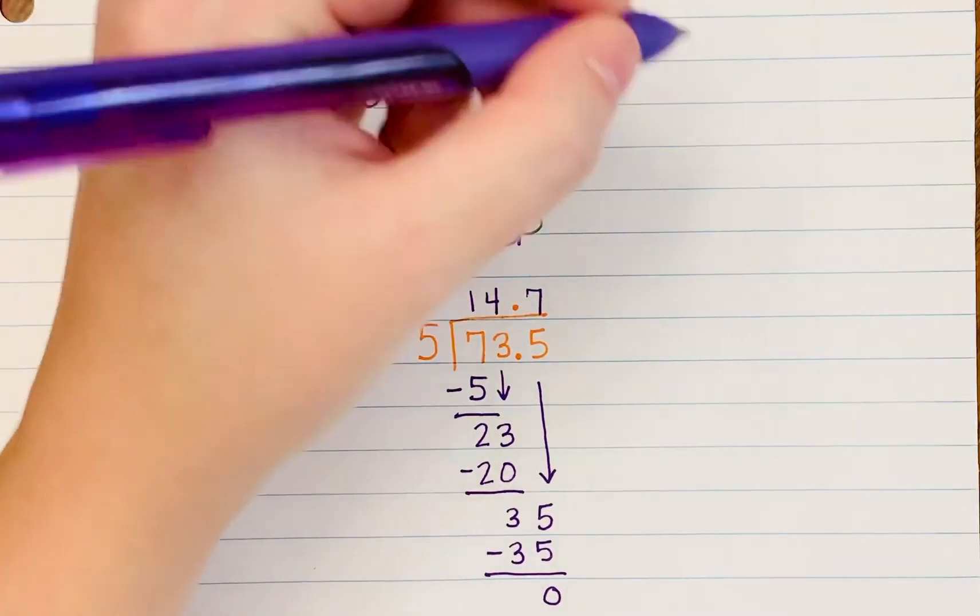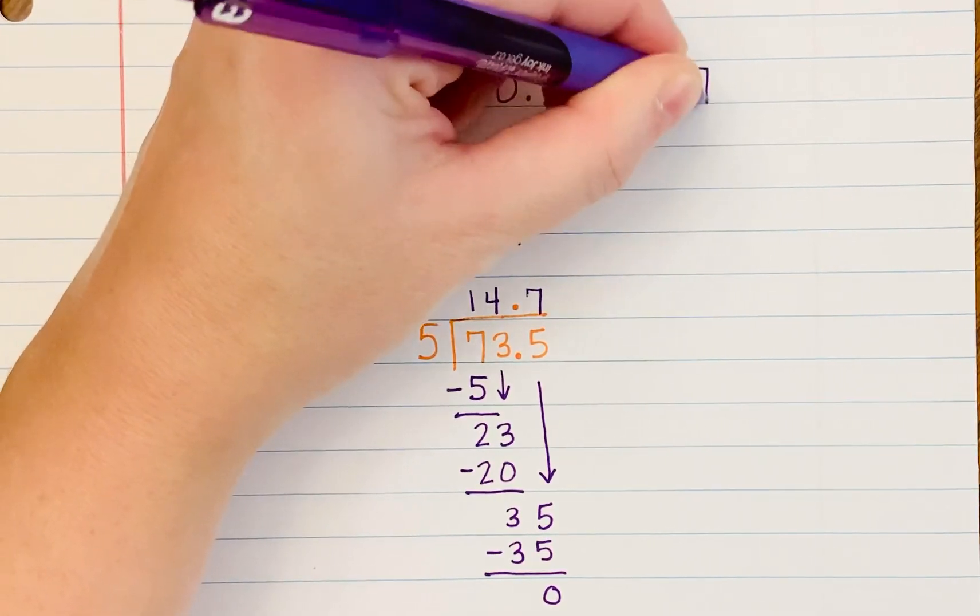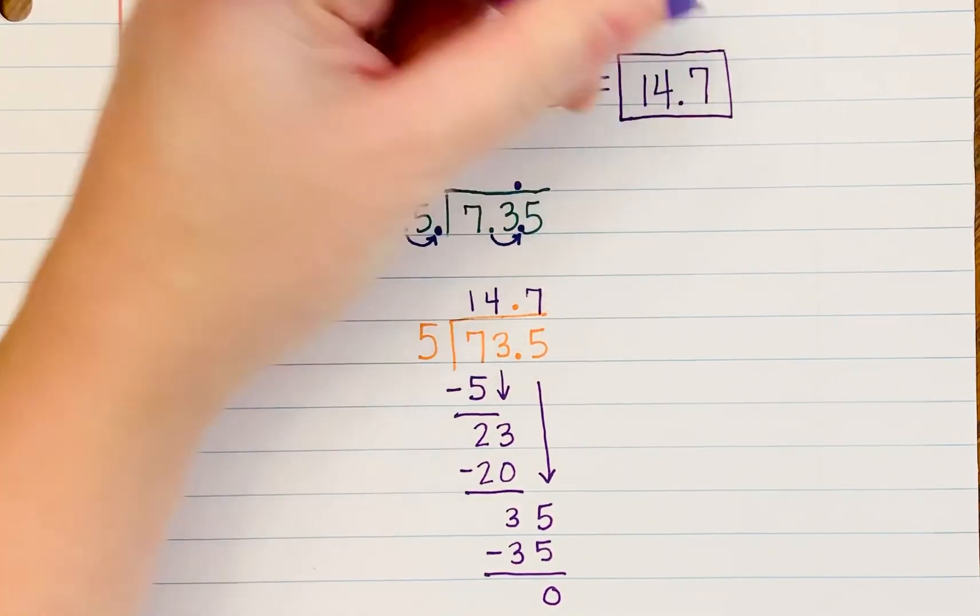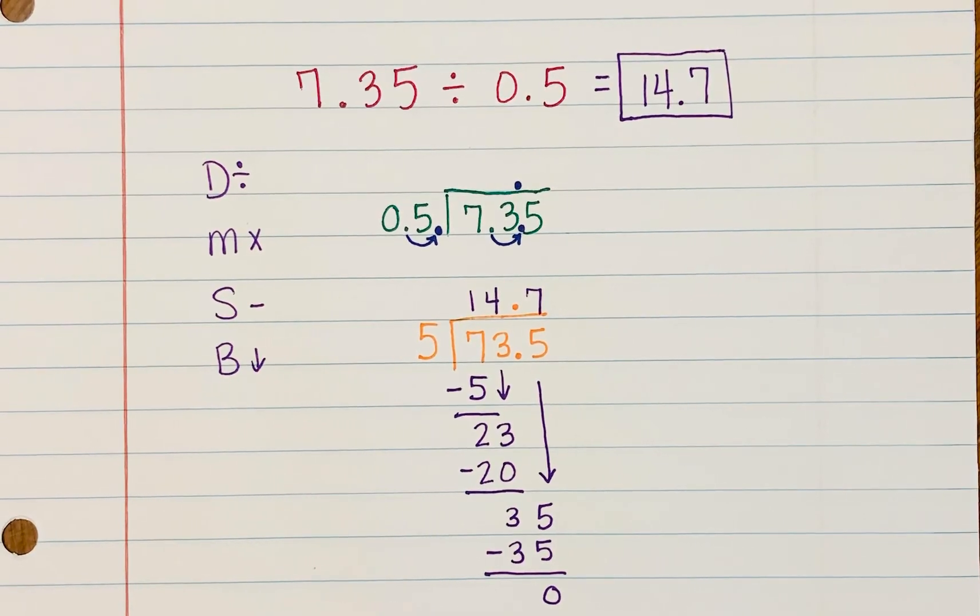So our answer here is 14.7. If you did not do slide, slide, raise the roof, you might get 147, you might get 1.47, but all of those are wrong. So you need to get 14.7.